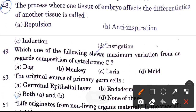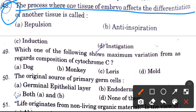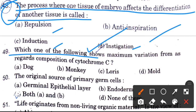The process where one tissue of an embryo affects the differentiation of another tissue — options are repulsion, anti-inspiration, induction, and instigation. The answer is induction.